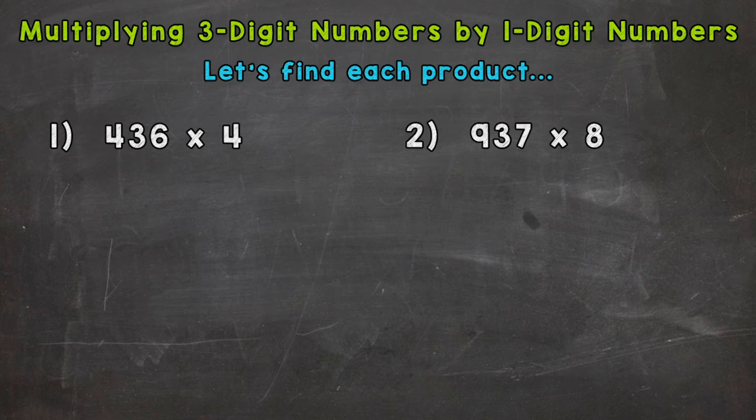So let's find each product here and remember product means the answer to a multiplication problem. So for number one we have 436 times 4 and the first thing we need to do is set this problem up.